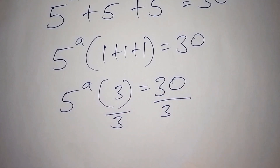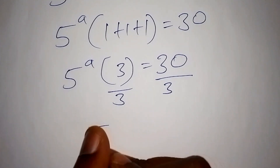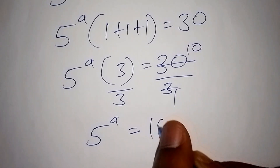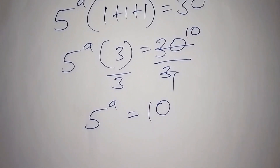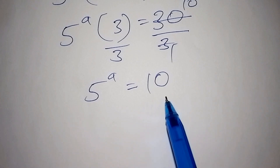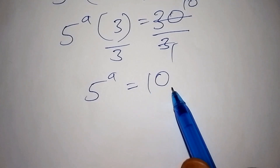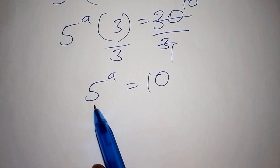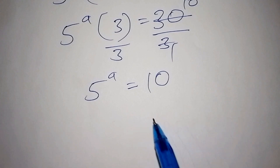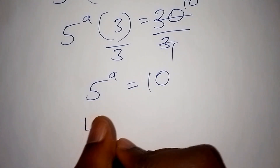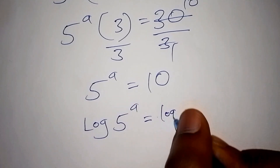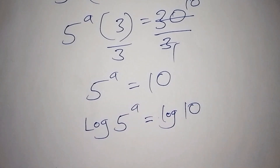Here over 3, here over 3. So now 5 to the power of a is equals to 10, since 30 divided by 3 is 10. We now have 5 to the power of a equals 10. We want to convert 10 to a power of 5, which is not straightforward, so we have to introduce the log from both sides. We shall have the log of 5 to the power of a equals the log of 10.